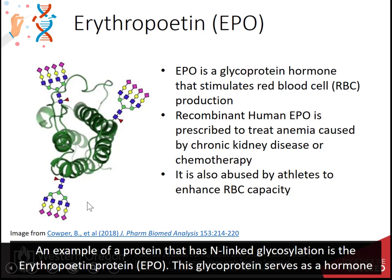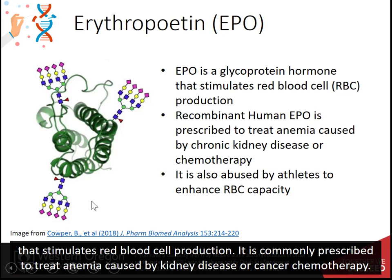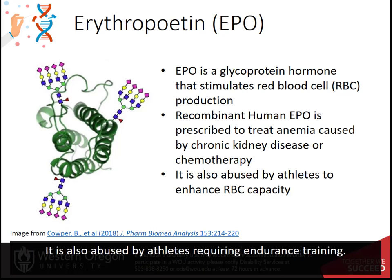This glycoprotein serves as a hormone that stimulates red blood cell production. It is commonly prescribed to treat anemia caused by kidney disease or cancer chemotherapy. It's also abused by athletes requiring endurance training.